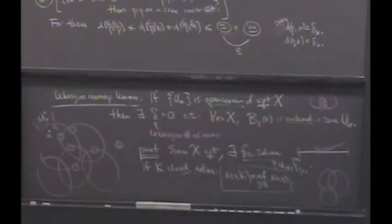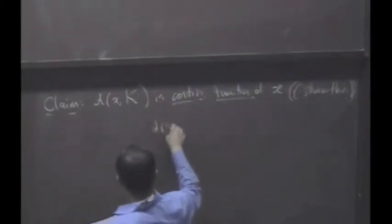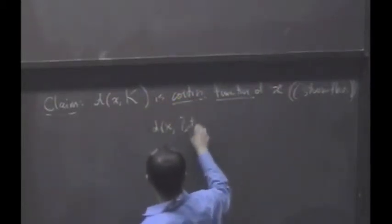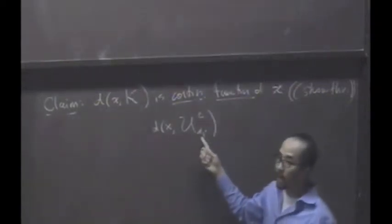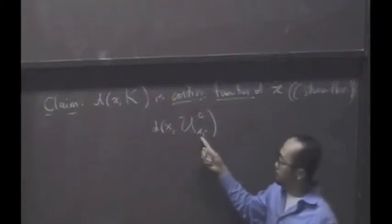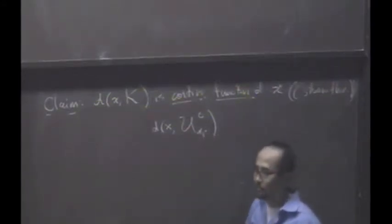Let's look at all distances between x and its complement. Let's look at distance between x and u alpha sub i complement. There's one for every i. Now, I'm hoping to show that the minimum of all of these is bigger than zero, right, for every x.